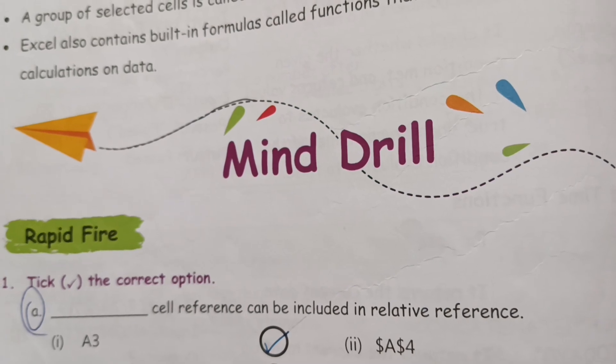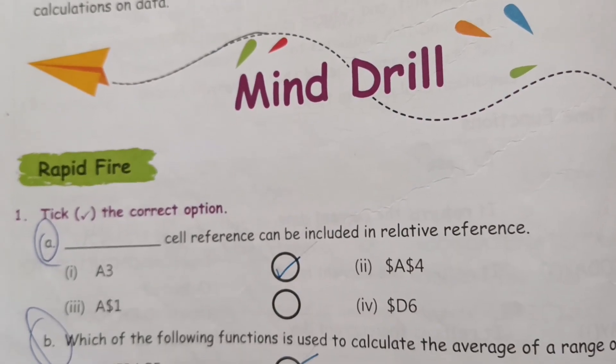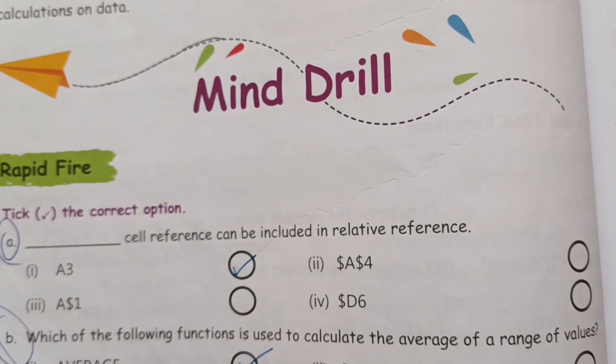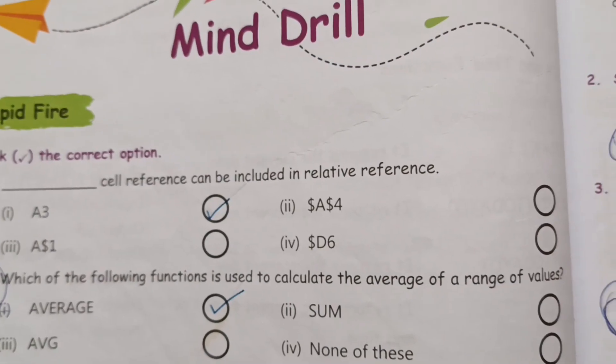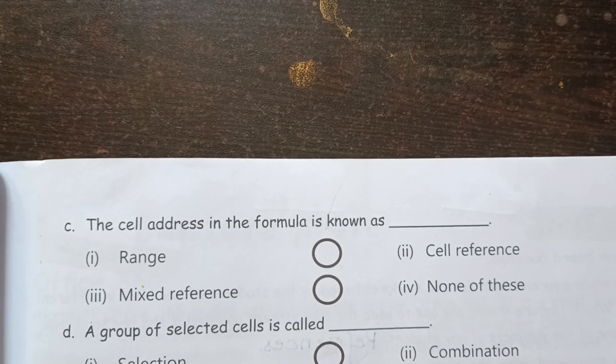Let us see the back exercises first. Tick the correct option: Cell reference can be included in relative reference, it is A3. Which of the following functions is used to calculate the average of a range of values? The answer is AVERAGE.